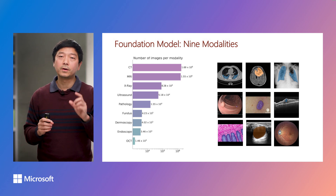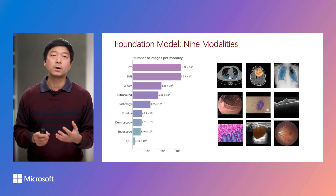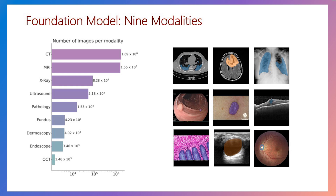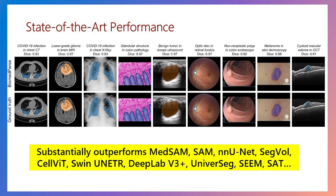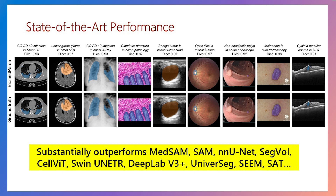BiomedParse is a single foundation model that can conduct holistic image analysis across 64 major object types in nine modalities. In one forward pass, BiomedParse can recognize, detect, and segment all biomedical objects in an image all at once. It attains state-of-the-art performance, outperforming prior best methods such as MEDSAM and SAM by a wide margin — up to 75 to 85 absolute points in DICE scores. By drawing on modeling of object-specific shapes, BiomedParse's superiority is particularly pronounced in the most challenging cases when the objects are complex and of irregular shapes.